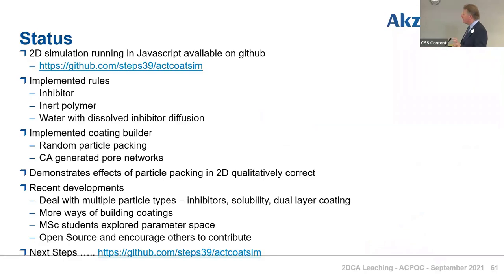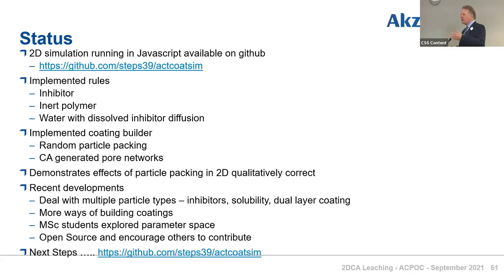The status: this simulation is available on GitHub, and anybody can play with it, alter the code, clone it, modify it. We've implemented rules for inhibitors, an inert polymer, water, the dissolution of inhibitors and diffusion, the coating binder, coating construction by random particle packing, and the cellular automata way of building a pore network. Hopefully you've seen it demonstrates that there's definitely an effect of not just the level of particles, but the way in which they're packed, that controls the release — and that's what we see happens in a real 3D system as well. MSc students have used it, and it's open source — we encourage you to use it.